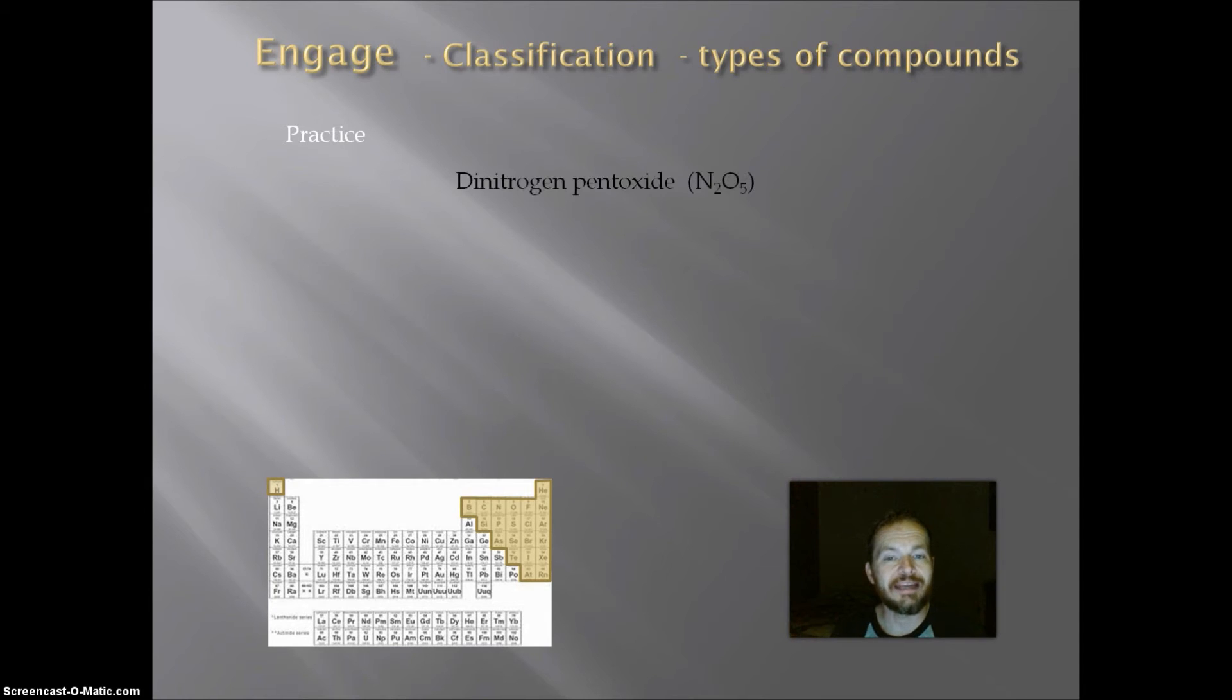Practice number two. Dinitrogen pentoxide, N2O5. Name ends in ide. That means it could be ionic or covalent. So we need to look at the compounds. And I see that it contains all nonmetals. Both nitrogen and oxygen are nonmetals. If it ends in ide and contains all nonmetals, then it is covalent.